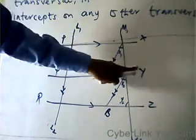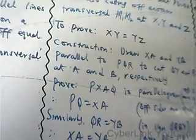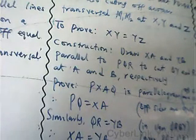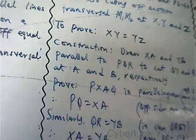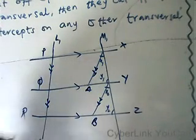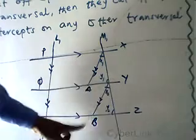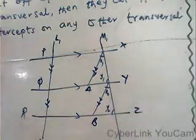That is what we want to prove: XY equals YZ, because from the given side PQ equals QR. For our construction, we draw XA and YB parallel to PQ and QR, to cut QY and RZ at A and B respectively. Our XA meets at QY, and our YB meets at RZ — that is where the two lines meet.